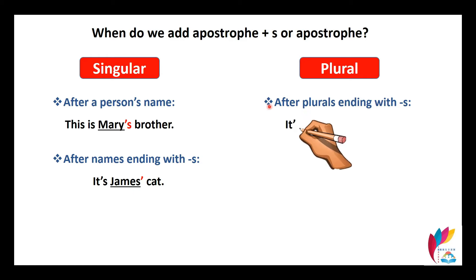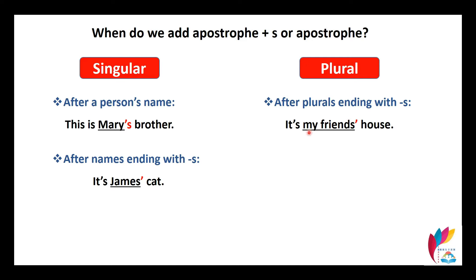Now let's look at plurals. After plural nouns ending with S, for example 'my friends' house.' If we have one friend (singular) we say 'my friend,' but with two or more we say 'my friends.' For plural nouns ending in S, we only add the apostrophe — no apostrophe S, just the apostrophe.